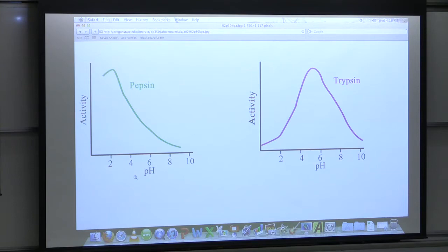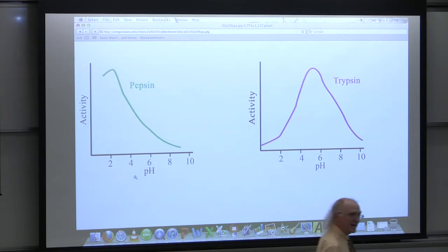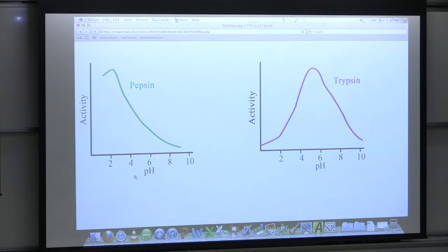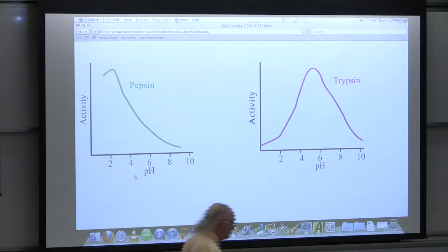Trypsin isn't found in the stomach — it's found lower in the digestive tract where the acid concentration has reduced considerably, at about the pH of the intestine. If I take trypsin and put it in the stomach at pH 3, it'll have maybe 10 or 15% of the activity it would have at pH 6. It's not going to be nearly as active because at pH 3 it will have a different charge than at pH 6.